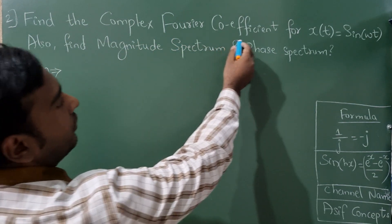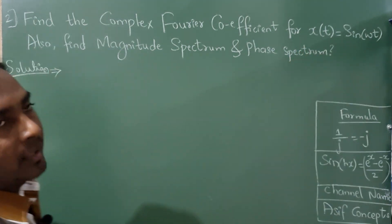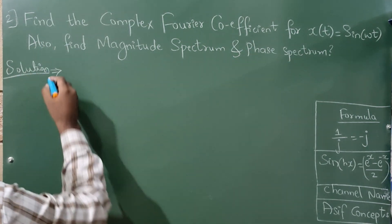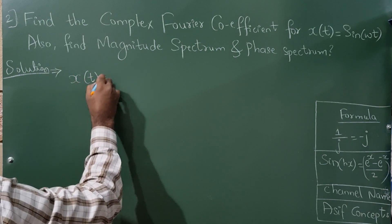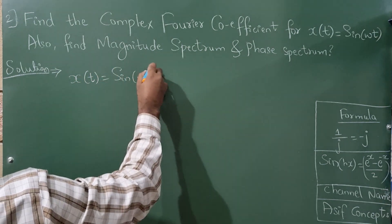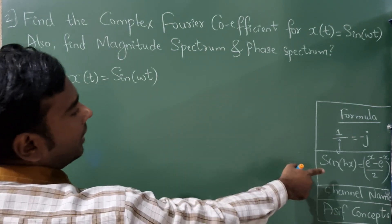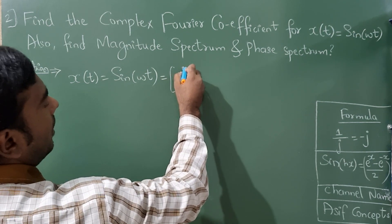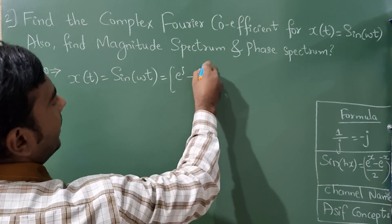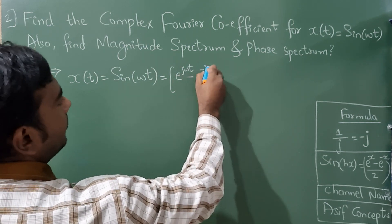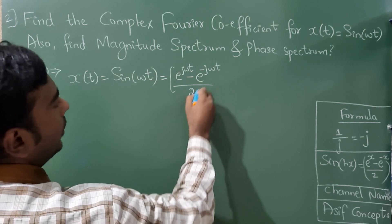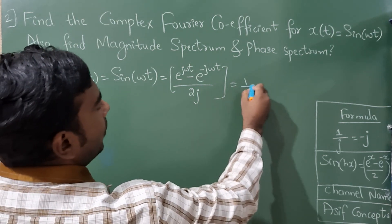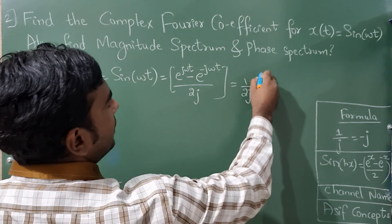Find the complex Fourier coefficient for x(t) = sin(ωt). Also find the magnitude spectrum and phase spectrum. Now, x(t) = sin(ωt). There is a formula for this: sin(ωt) = (e^(jωt) - e^(-jωt)) / 2j.